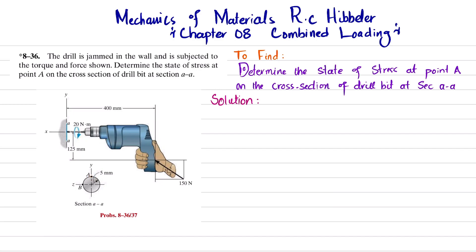Let's start with the solution. The first step is that if you cut along section AA, you will have a reaction force in the X direction — that is NX — and a shear force VY in the downward direction. Since a 20 Newton-meter torque is applied, there will be a reaction torque T in the opposite direction. The last reaction is a moment about the Z axis, MZ. We will find NX, VY, MZ, and the reaction torque using equations of equilibrium.